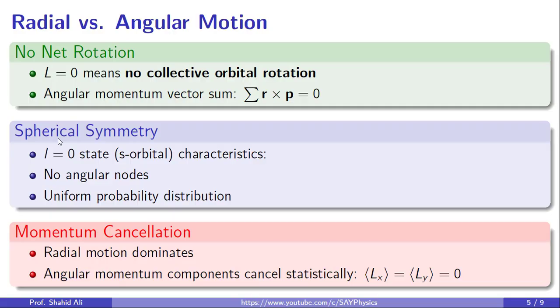Instead, radial motion dominates. The electron moves toward and away from the nucleus radially, but without any net spin around it. This is the subtle but powerful nature of motion in a quantum L equal to zero state.